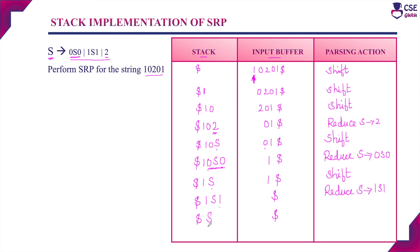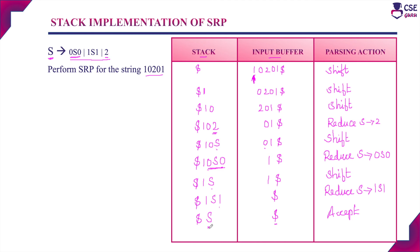Since the stack derives the start symbol of the grammar and the input buffer contains only the dollar symbol — that is the input buffer is empty — we can accept the given input string. Suppose the stack cannot derive the start symbol of the grammar, then the parser will raise an error and it will call the error recovery routine.